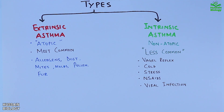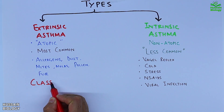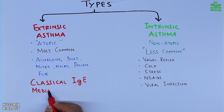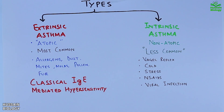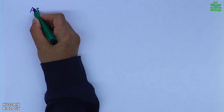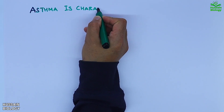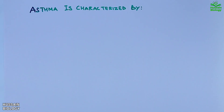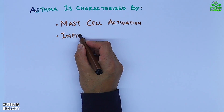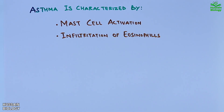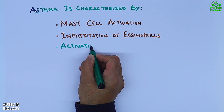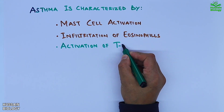When we talk about antibodies, extrinsic asthma is classical IgE-mediated hypersensitivity. Moreover, asthma is characterized by mast cell activation, infiltration of eosinophils, and the activation of T helper type 2 cells.